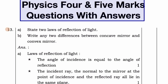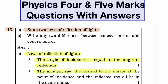Question number 13A: State two laws of reflection of light. Answer — Laws of reflection of light: The angle of incidence is equal to the angle of reflection. The incident ray, the normal to the mirror at the point of incidence, and the reflected ray all lie in the same plane.